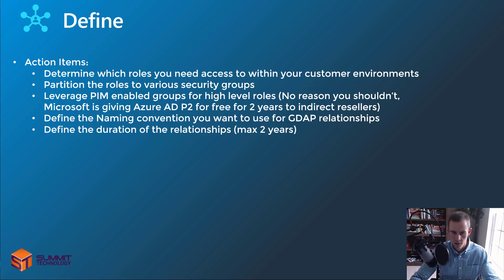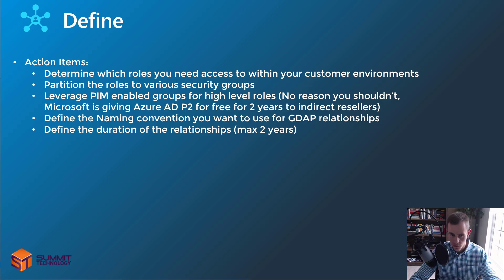The last two items here are basic general maintenance for GDAP relationships. You need to choose a naming convention you want to use — I typically just use the MSA-customer name nomenclature to keep things easy and consistent. Note that no two names can be the same for each customer's GDAP relationship. The other thing is to define the duration of the relationships — the max is two years, and a lot of you are going to accept that just because you don't want to renew relationships on a more frequent basis.